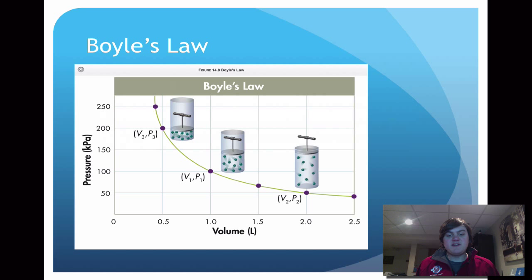Then if we look at V2P2, it has 50 kilopascals but 2.0 liters. And if we multiply those, it also equals 100. So you can see the product of pressure and volume is going to be constant.